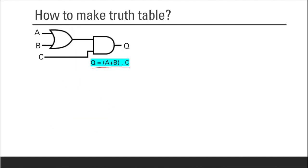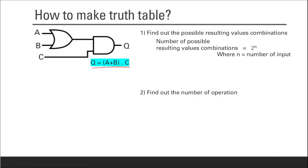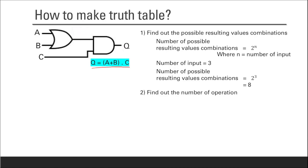Next, we learn how to make a truth table. For the Boolean expression Q equals (A plus B) dot C, first find the number of possible input combinations using the formula 2 to the power of n, where n is the number of inputs. With three inputs, that gives 2³ equals 8 possible combinations.